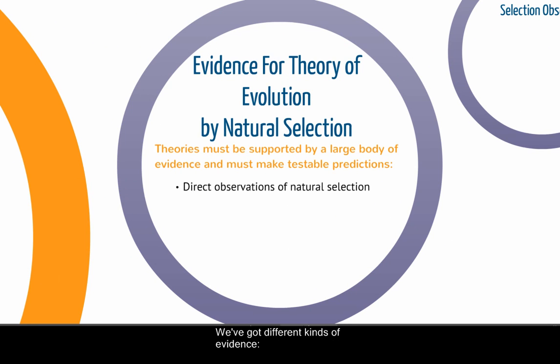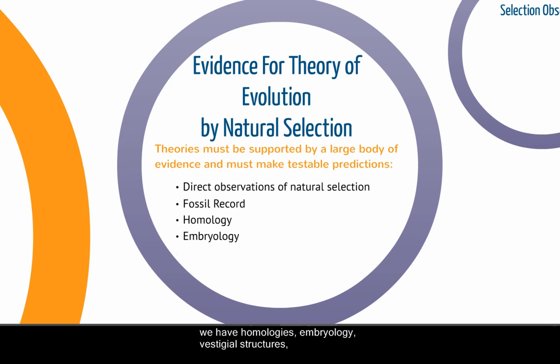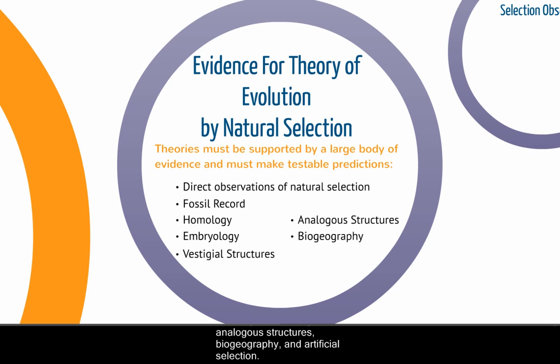We have different kinds of evidence: direct observations, the fossil record, homologies, embryology, vestigial structures, analogous structures, biogeography, and artificial selection. I'm going to talk briefly about each one of these.